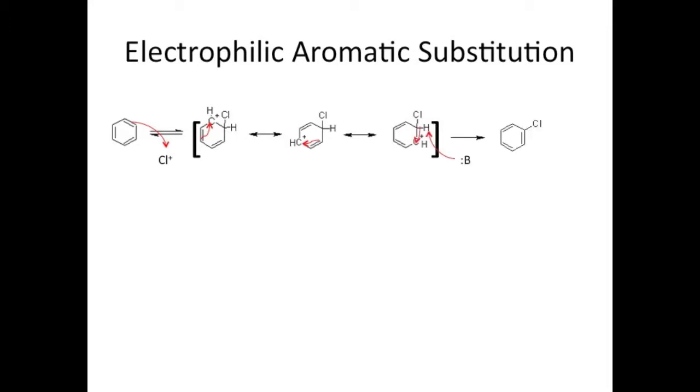After it goes around the ring, a base then pulls off a proton from the same carbon the electrophile added to, reforming the benzene ring with the new substituent on it. So it's a two-step reaction, and as you can imagine, the slow rate-determining step is the first one. Opening up a stable benzene ring into something much less stable requires a fair amount of energy.